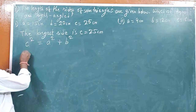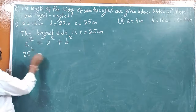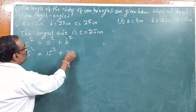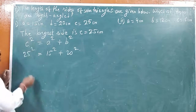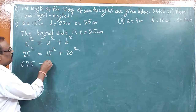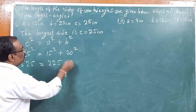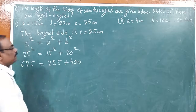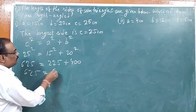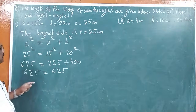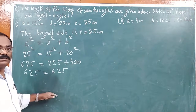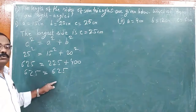Now, C is 25, so we check: 25 square is equal to A square plus B square, that is 15 square plus 20 square. 25 into 25 gives us 625, equal to 15 into 15 which gives 225, plus 20 into 20 which gives 400. So 625 is equal to 225 plus 400, which gives 625. Here you can see that C square equals A square plus B square — both give 625.